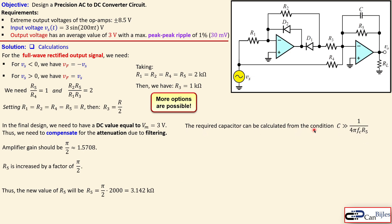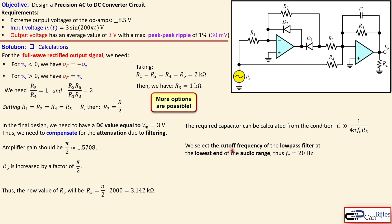The required capacitor is calculated using C = 1 / (4π × fcutoff × R5). We select the cutoff frequency of our low-pass filter as 200 Hz — the lowest end of the audio range in this case — though you could choose a slightly higher value depending on the application. This gives C ≈ 1.27 μF.